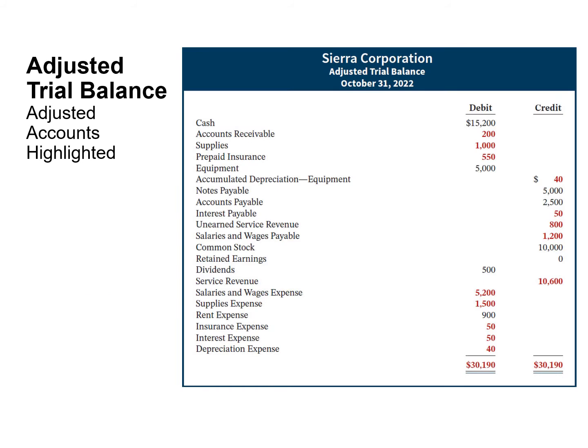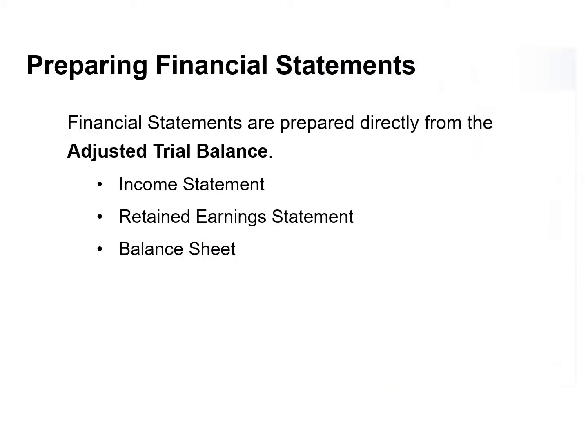This is the adjusted trial balance for Sierra Corporation. The amounts affected by the adjusting entries are highlighted in red. Companies can prepare financial statements — more specifically the income statement, the retained earnings statement, and the balance sheet — directly from an adjusted trial balance.